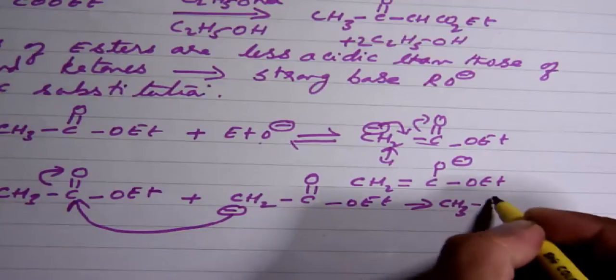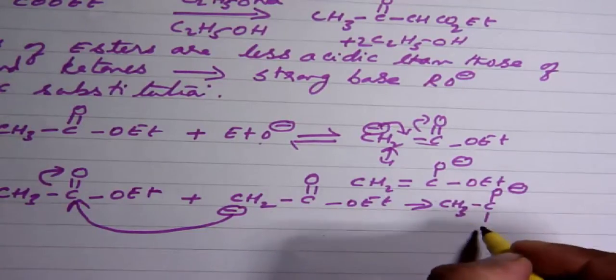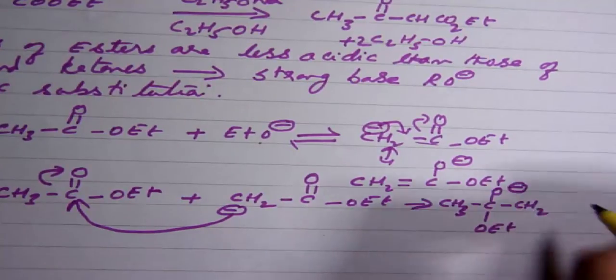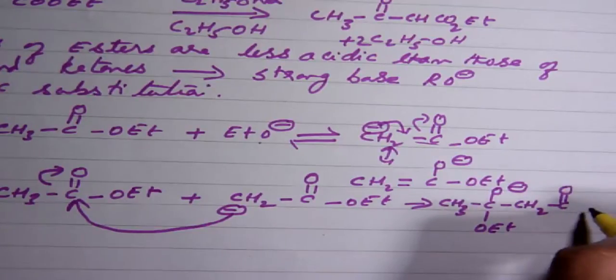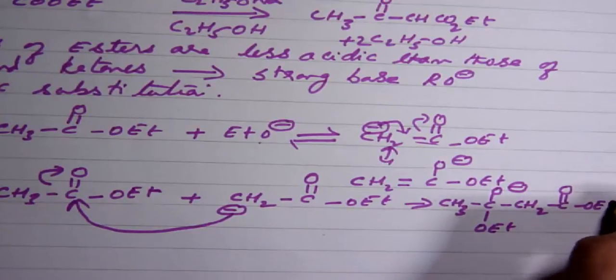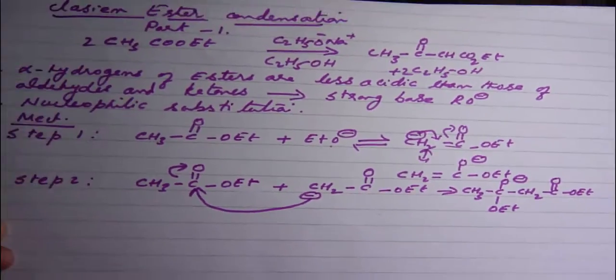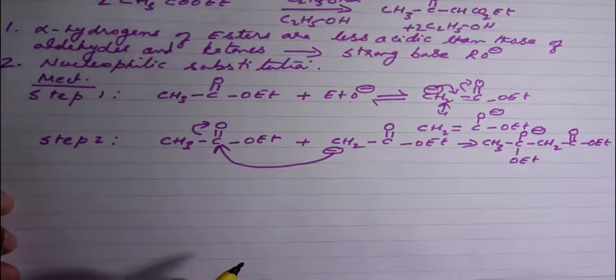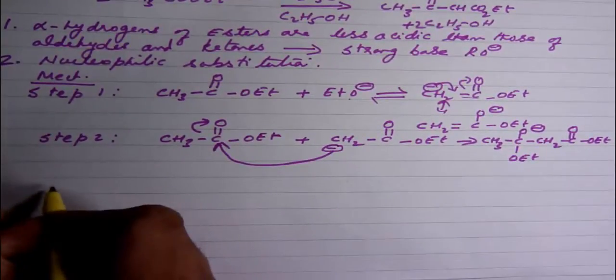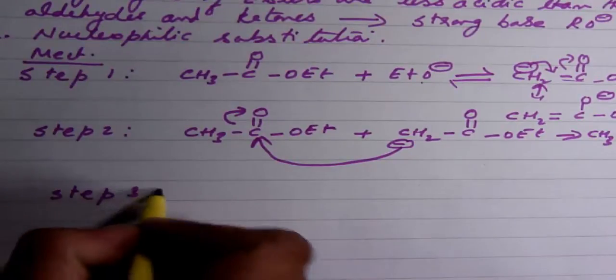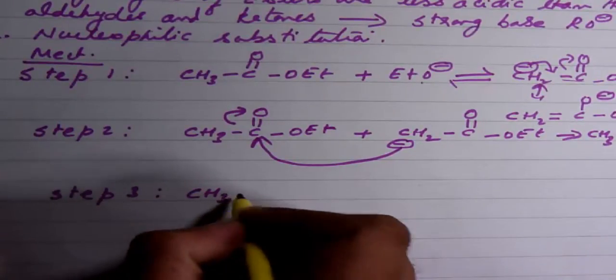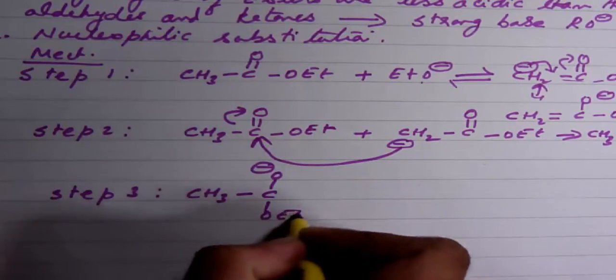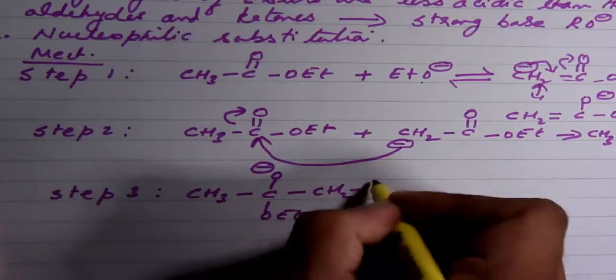Step three: I am going to have CH3-CO⁻-OEt-CH2-CO-OEt. Now this is going to react and this O⁻ is going to come back down and remove the alkoxide, the ethoxide in this case, and we get the beta-keto ester plus the alkoxide.